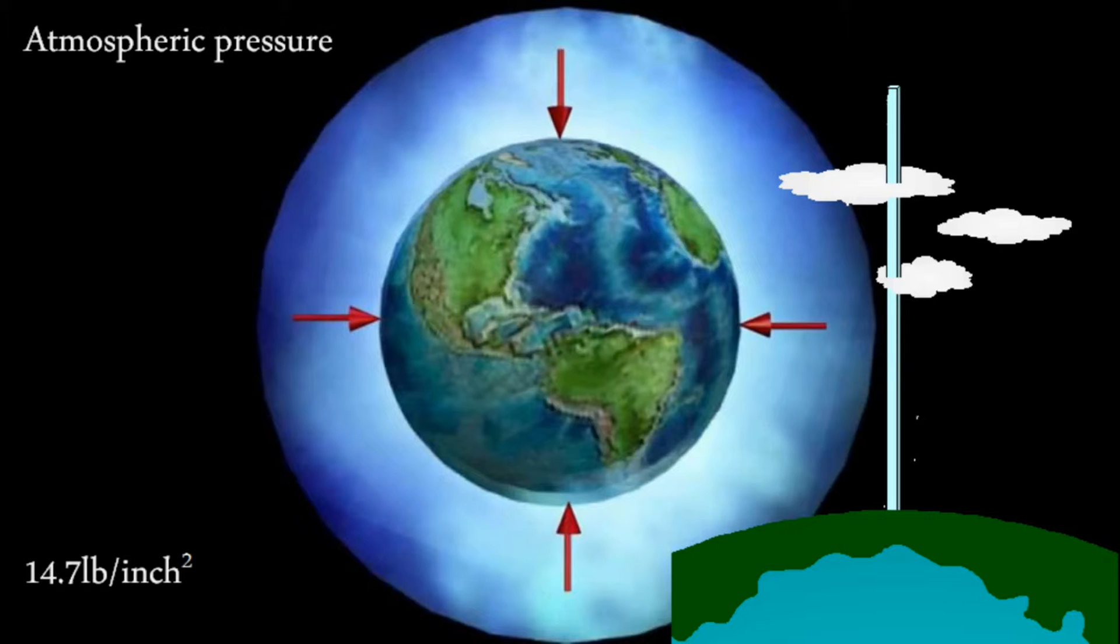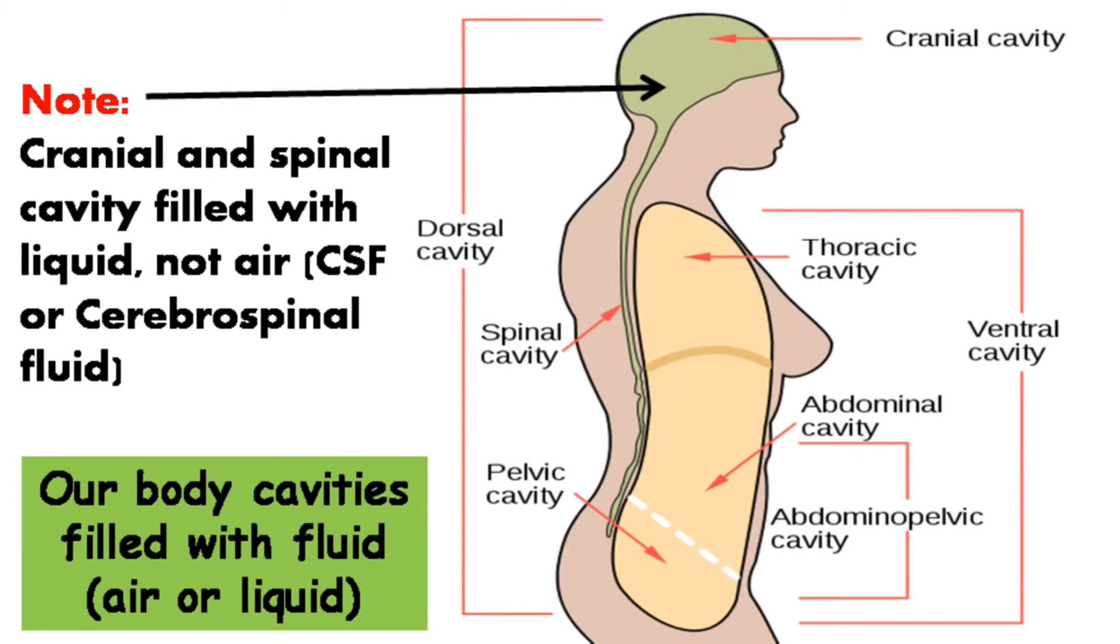This pressure is almost 14.7 pounds per square inch. This much pressure is enough to break a wooden box, but we don't get crushed because there is air inside our body cavity and it is applying outward force, plus our skeleton is hard enough to withstand pressure.